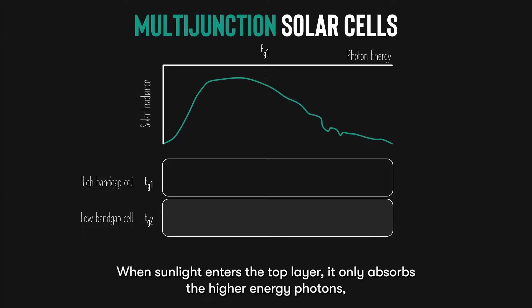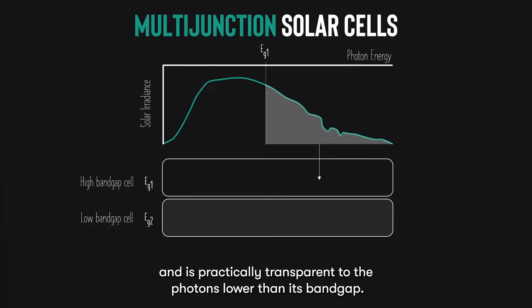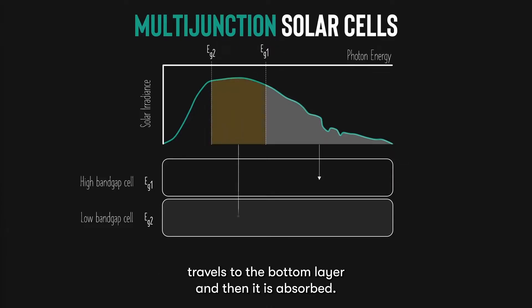When sunlight enters the top layer, it only absorbs the higher energy photons, and is practically transparent to the photons lower than its band gap. This lower energy photons travels to the bottom layer, and then it is absorbed.